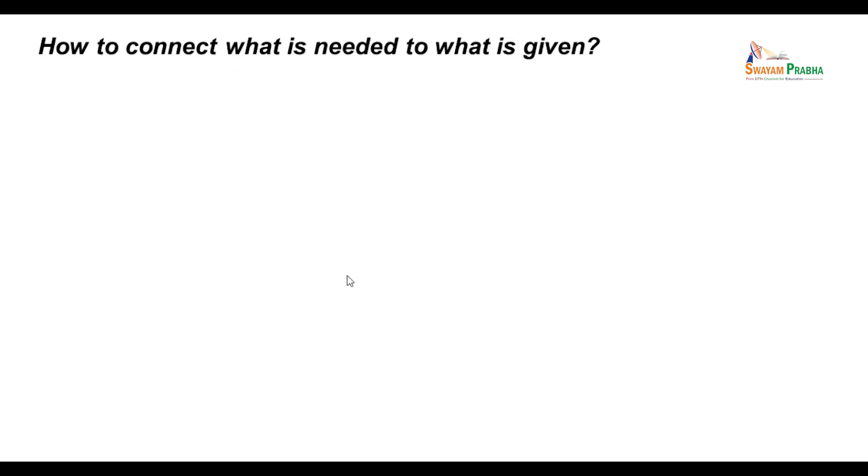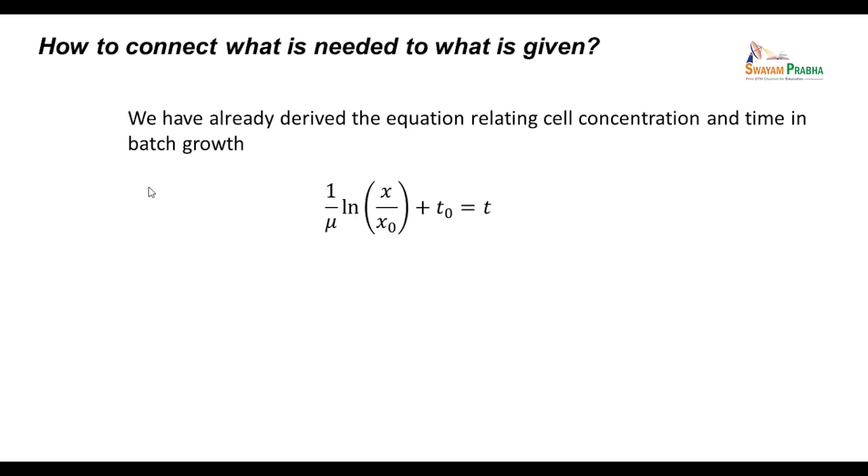Now, how to connect what is needed with what is known? We have already derived the equation relating the cell concentration and time in batch growth in the previous lecture. The equation was: 1/μ ln(x/x₀) + t₀ = t.